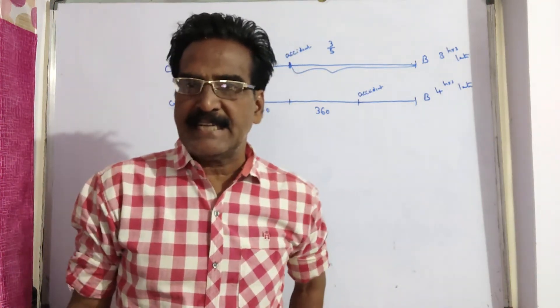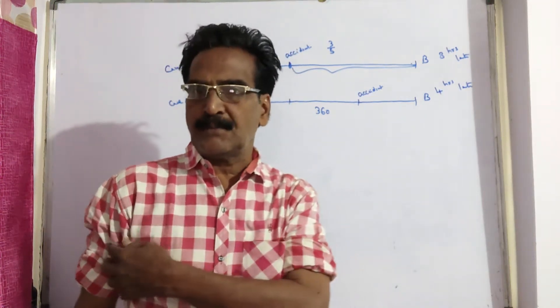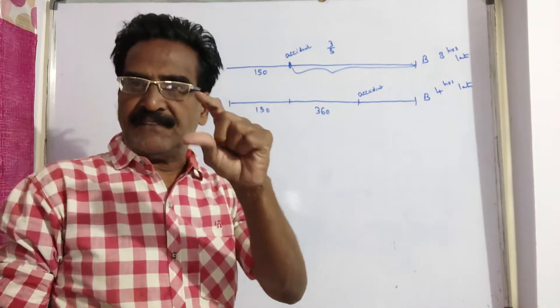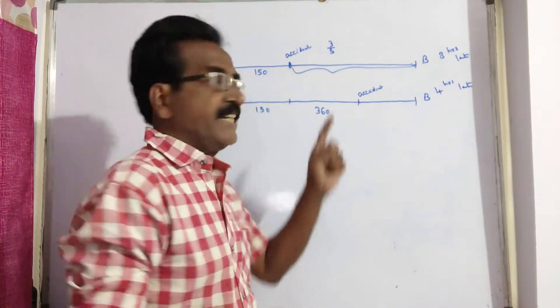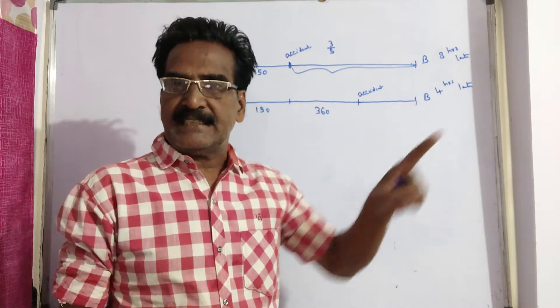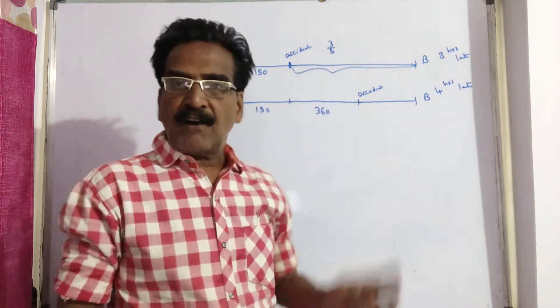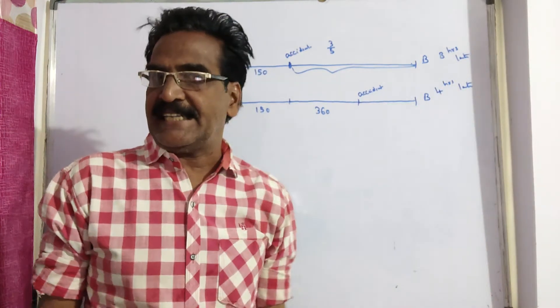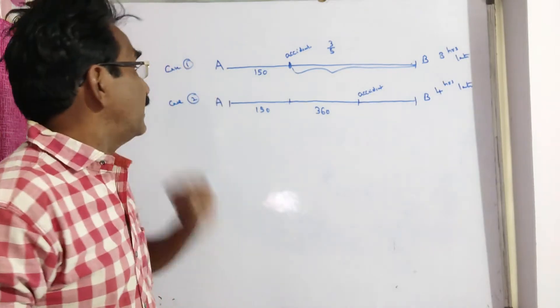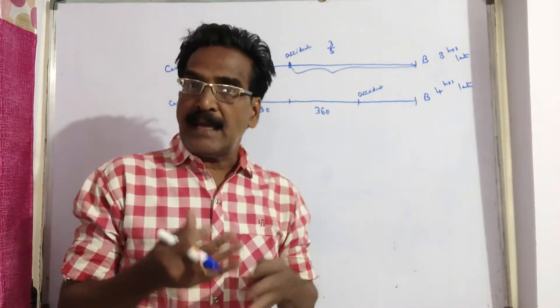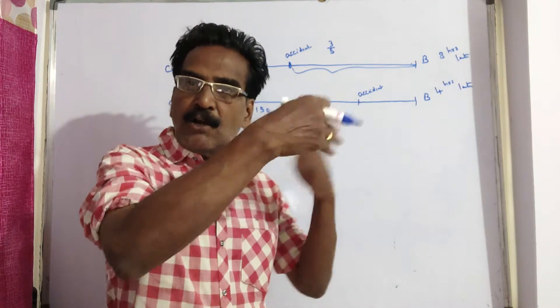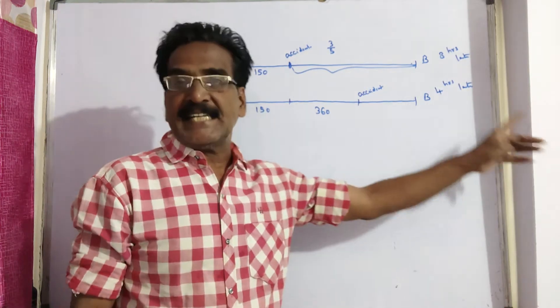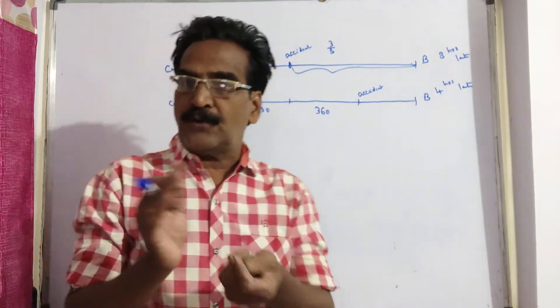Hi friends, good morning. Please look at the next problem in problems on trains. This is an interesting problem. A train after traveling 150 km meets with an accident at this point, and after that it travels 3/5 of its original speed and reaches 8 hours later to its destination B. That is case 1. Case 2: had the accident occurred 360 km further, that is if the accident occurred at this place, then it reaches the destination only 4 hours late.